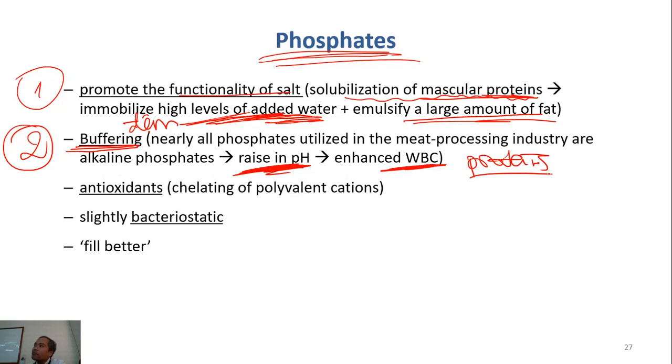For example, the case of DFD meat, high pH, high water-binding capacity. So now, phosphates have a buffering capacity and help protein maintain the high pH level capacity and then maintain the condition where the product holds a lot of water.